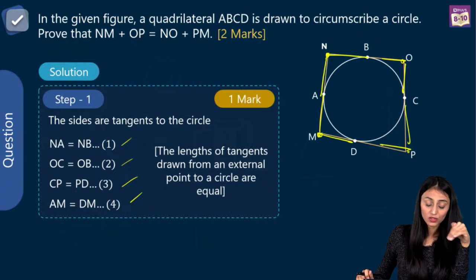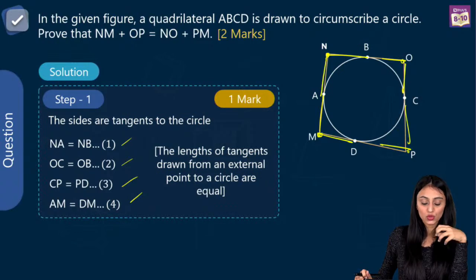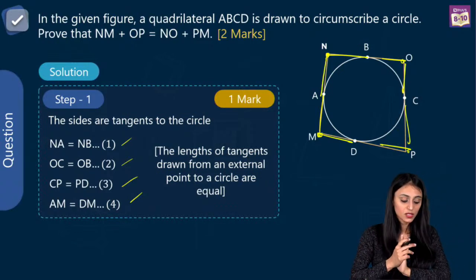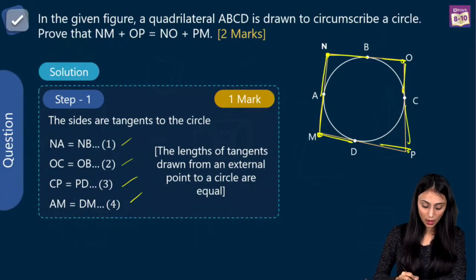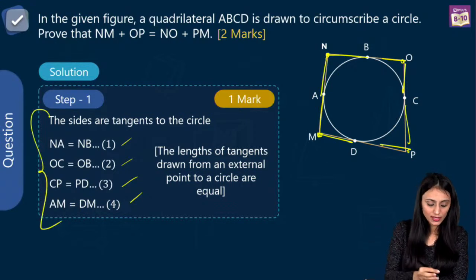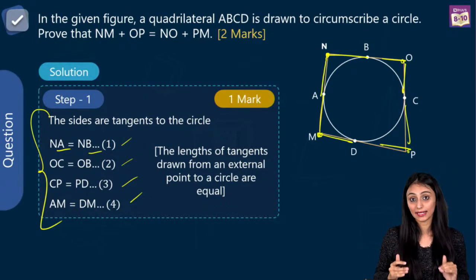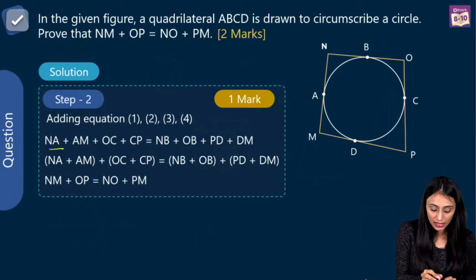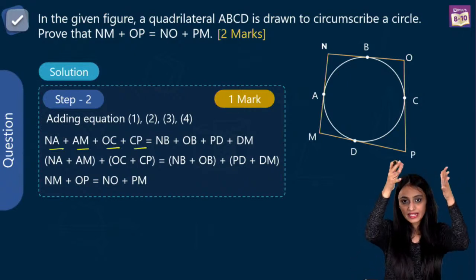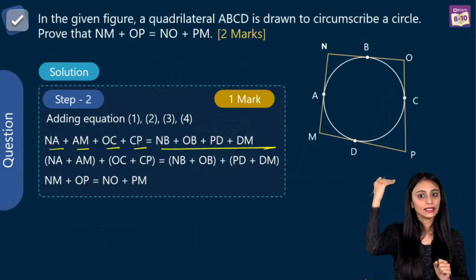Though it is an NCRT question, there is a very common mistake that students make here. In the next step, we are going to add these equations up. You would say that whether we write NA equals to NB or NB equals to NA, it's one and the same thing. But you have to be really careful while writing them, because the next step is to add all these equations up. Once I add them up, I have NA, AM, OC, and OP — whatever is written on the left side will be added up, and whatever is on the right side will be added up.